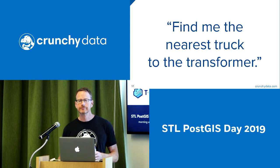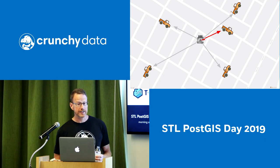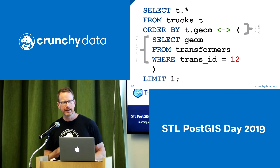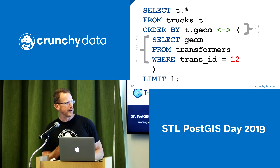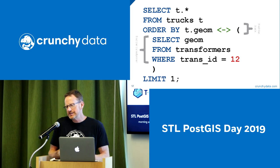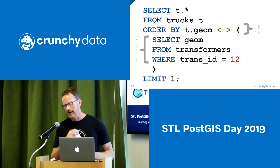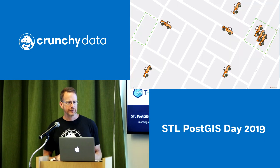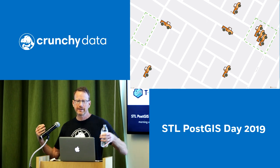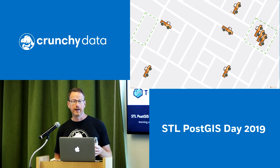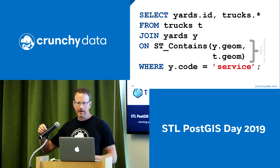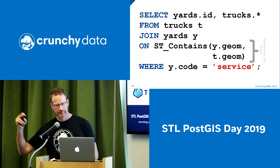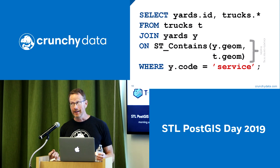Find me the nearest truck to the transformer. This is a little bit longer because we're invoking the index-assisted nearest neighbor operator — I call it the 'tie fighter operator' because it looks like Darth Vader's tie fighter. It orders things by distance using the index. Again, six or seven lines of SQL. What trucks are in the service depots? Just a simple spatial join: find all things in the truck table that link up to the depot table on the condition of trucks being in depots. Five lines of SQL. You can answer very complex questions very quickly using this language.